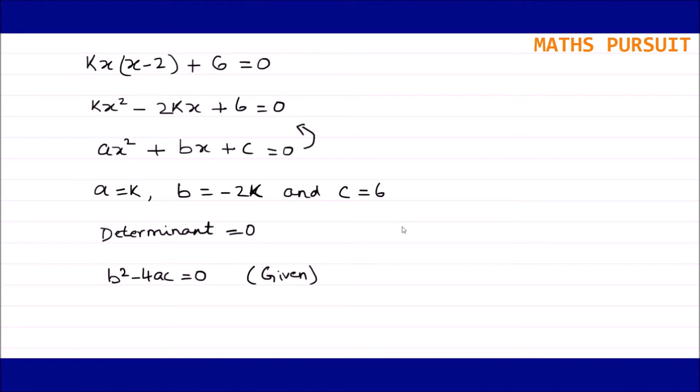Let us first of all replace these things in this particular equation b² - 4ac. So instead of b I can write (-2k)² - 4 × a. Here the value of a is k and the value of c is 6, equals 0.